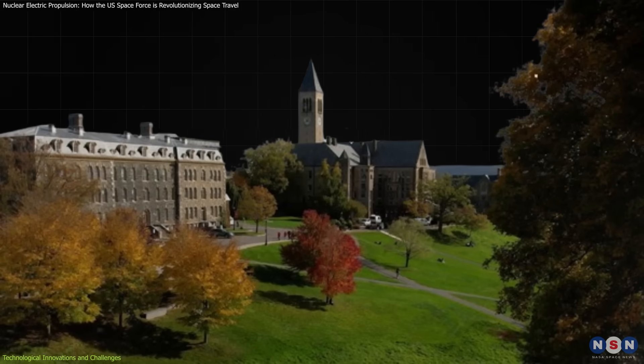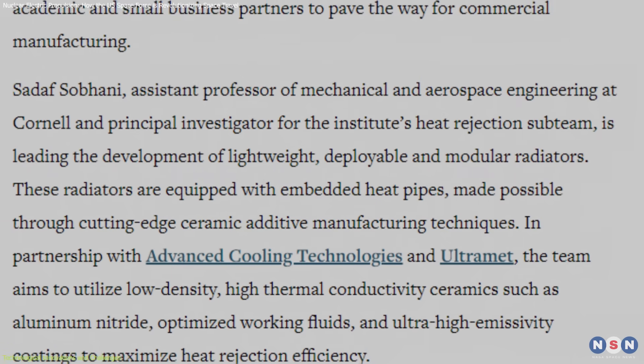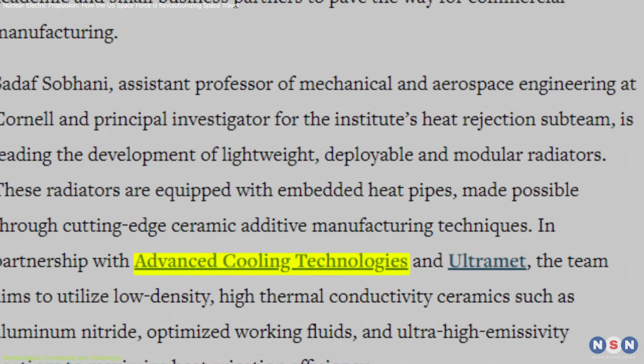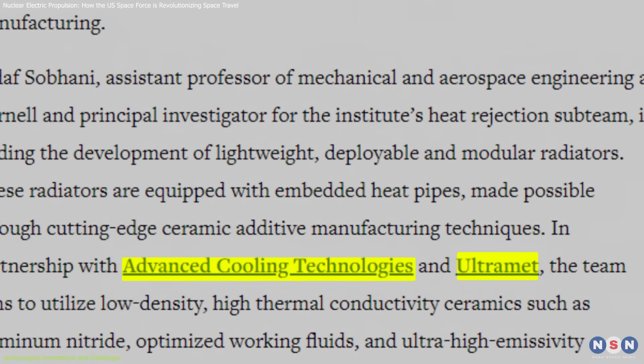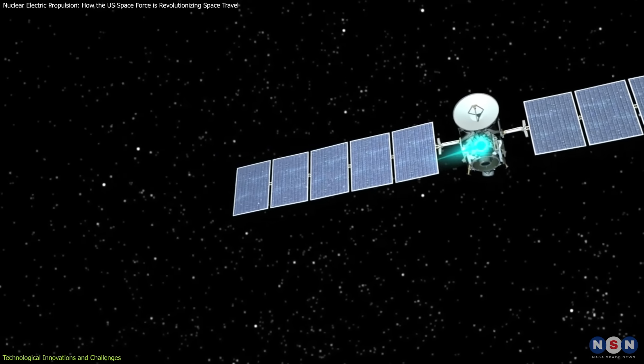This is where the work of Cornell University becomes vital. Their lightweight radiators are designed to maximize heat dissipation while minimizing mass, which is an essential consideration when every gram counts in space travel.